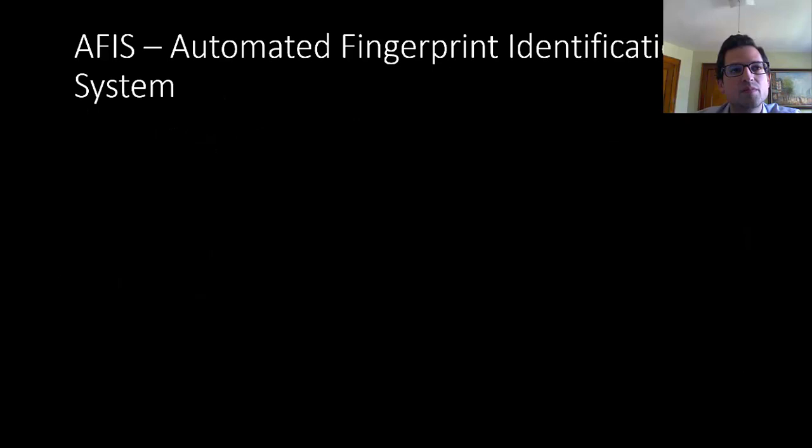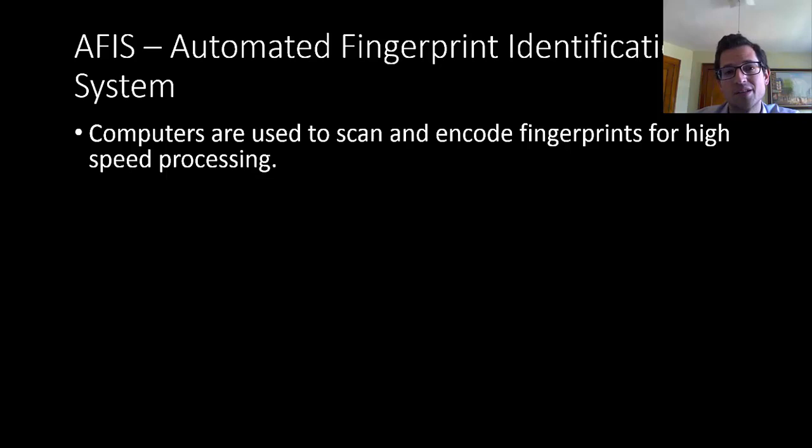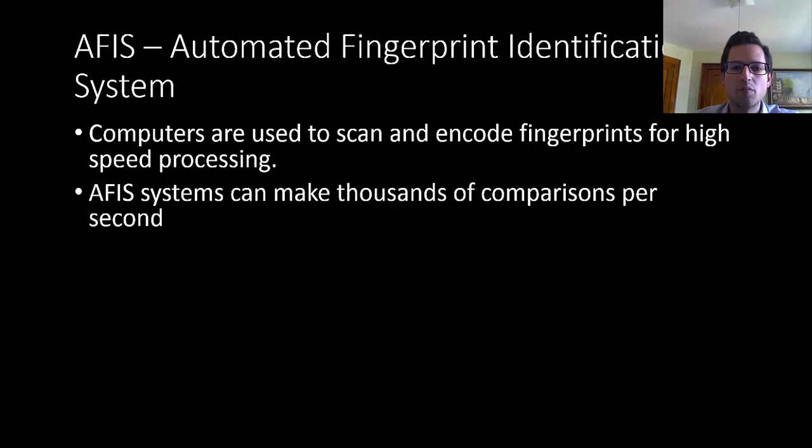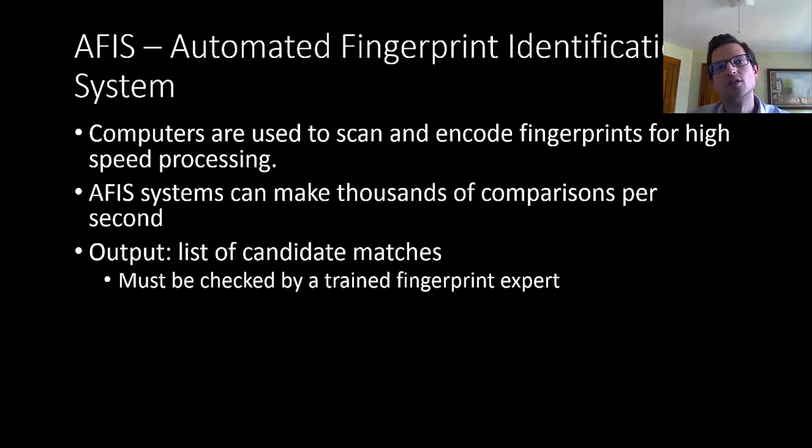We abbreviate these as AFIS. There are many AFIS systems, and in all of these systems, computers are used to scan and encode fingerprints for high-speed processing. There's a little glass plate with a scanner underneath, and you put your fingers on it. In contrast to a human fingerprint analyst who could maybe make several comparisons per hour, an AFIS system can make thousands of comparisons per second. The output is a list of candidate matches, and those are checked personally by a trained fingerprint expert. The ultimate determination is made by a human fingerprint analyst.